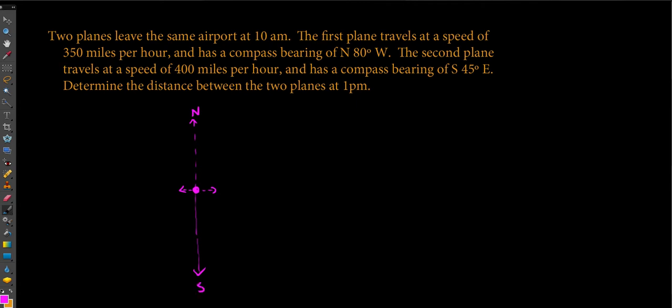Our first plane was traveling at a compass bearing of north 80 degrees west at 350 miles per hour. So if we look at north 80 degrees west, that means go north and rotate 80 degrees towards the west. It would almost look like this. I'll put a little arrow here to indicate this direction and distance, and we'll make sure we put on this 80 degree rotation right here. We've rotated 80 degrees towards the west from north.